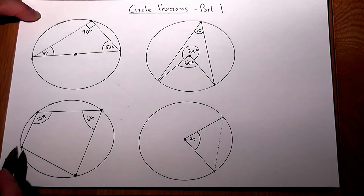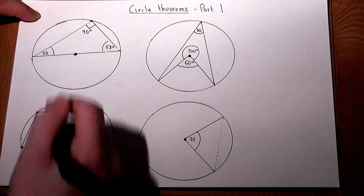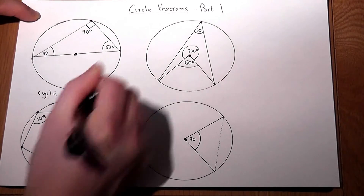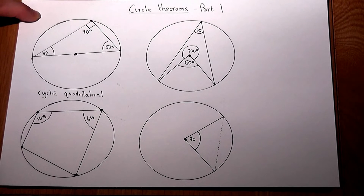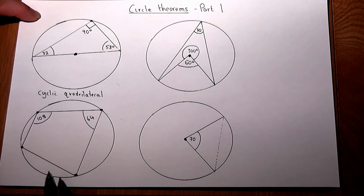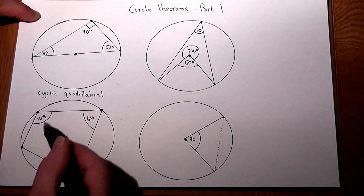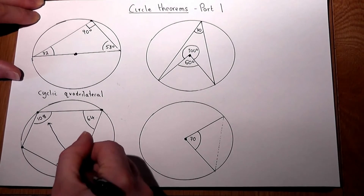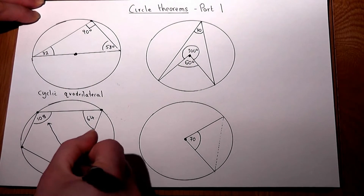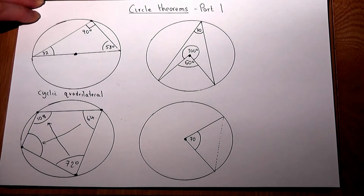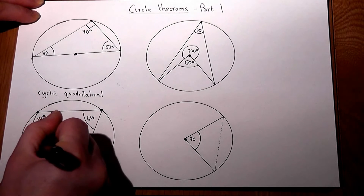The third one involves what's called a cyclic quadrilateral. This states that opposite angles in a cyclic quadrilateral — i.e. a four-sided shape where the vertices touch the circumference — add up to 180 when they're opposite. So that angle there and the one opposite add to 180, so that must be 72 degrees. Similarly, these angles will also add up to 180, so that must be 116 degrees.